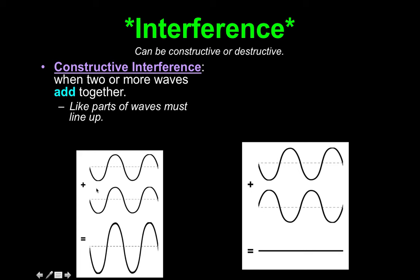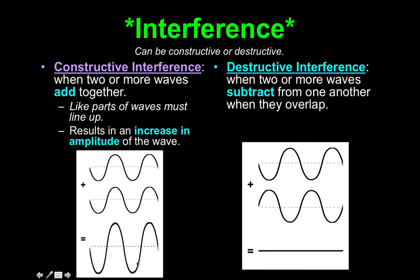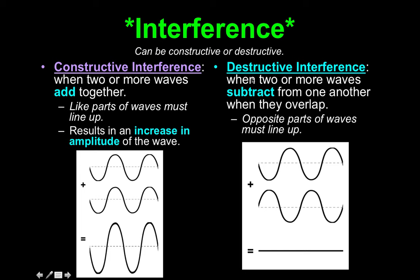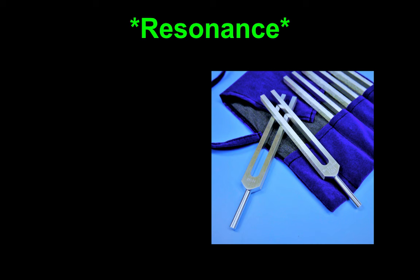There are two types of interference: constructive and destructive. Constructive interference is when you add two or more waves together — the crest and trough are added to make a bigger wave, which increases the amplitude. Remember, amplitude is the distance from the resting point to the crest. So crest plus crest equals a higher crest, and trough plus trough equals a bigger trough. Destructive interference is the opposite — two or more waves subtract from one another where they overlap. Opposite parts must line up: a crest and a trough line up and subtract from each other. Constructive means add; destructive means subtract.